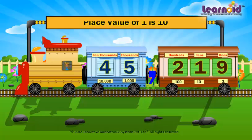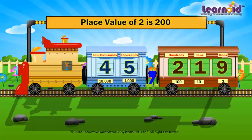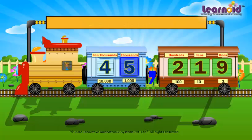Number 2 is in the 100's window. Its place value is 200. Number 5 is in the 1000's window. Its place value is 5000.